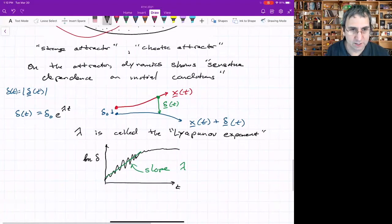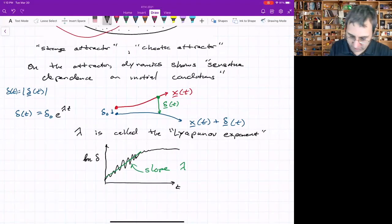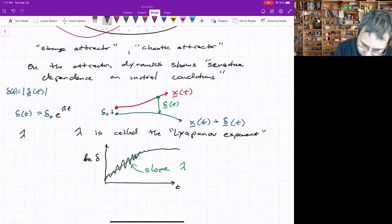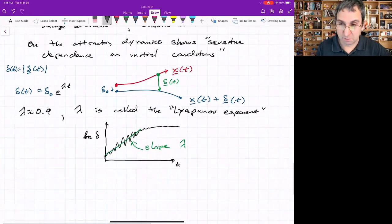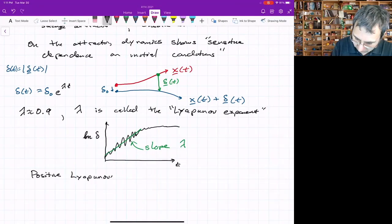For the parameters that Lorenz used, r equals 28 and everything, you'd find a Lyapunov exponent of about 0.9. So it's positive. So this is one way to characterize the motion, see if there's a positive Lyapunov exponent. So positive Lyapunov exponent is a signature of chaos.